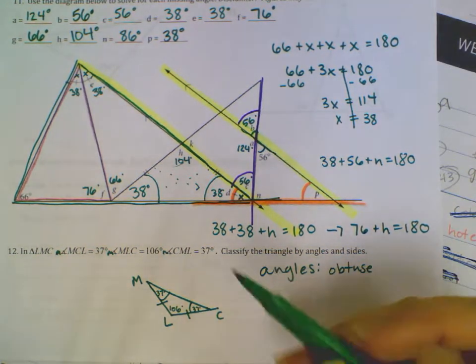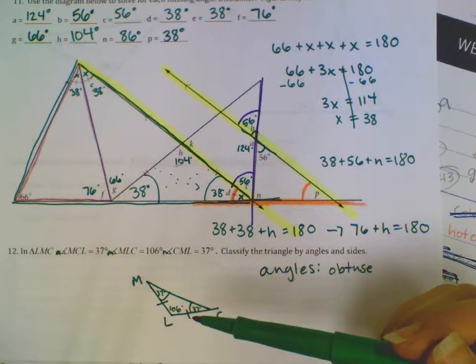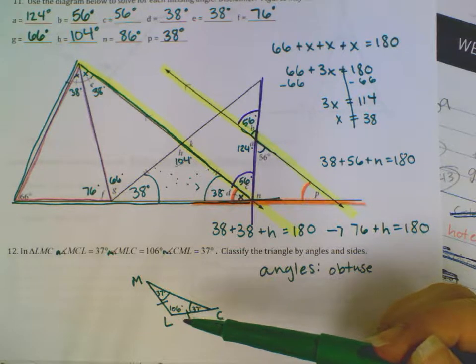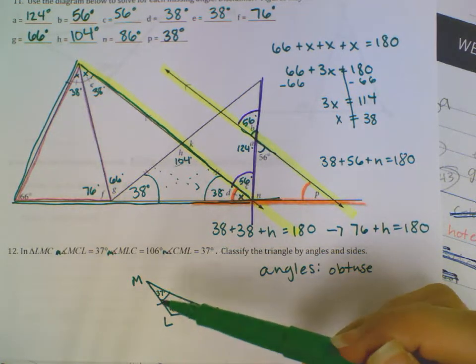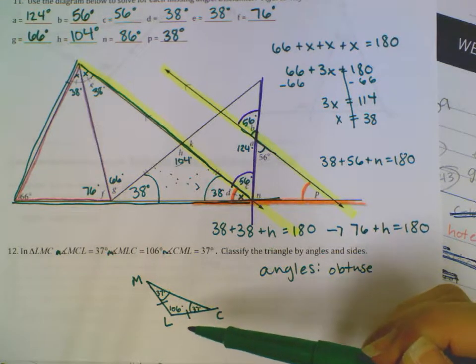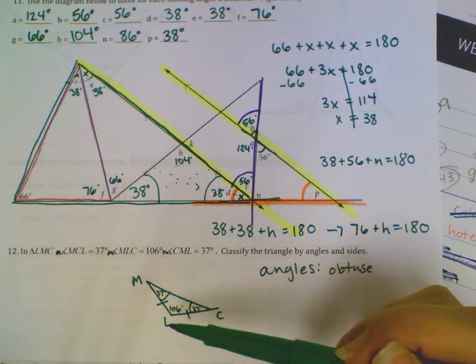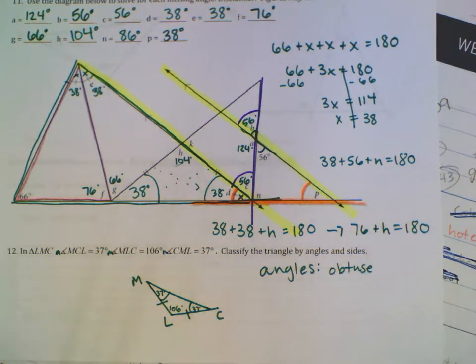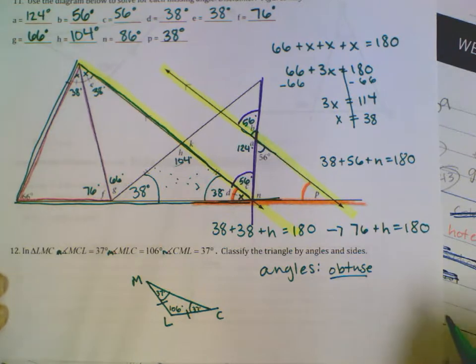The reason you wouldn't have more than one obtuse triangle, or one obtuse angle in a triangle, is because obtuse means more than 90. So if we have two angles that are more than 90, 90 plus 90 is 180, so that means out of the two angles of our triangle we would already be over 180 degrees for our triangle. So that won't work. So as long as it has one obtuse angle, it's an obtuse triangle.